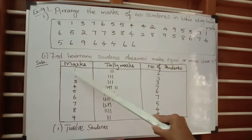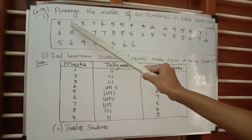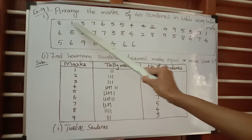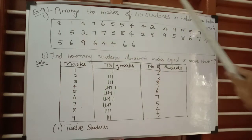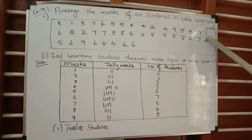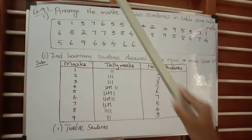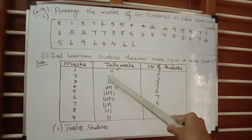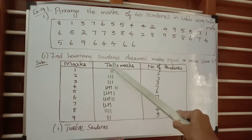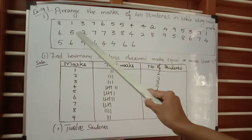For mark one, we need to count how many times it has been repeated. In the first row, the digit one has been repeated two times. So we need to draw two vertical lines for the tally marks, and the number of students is two.